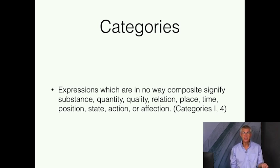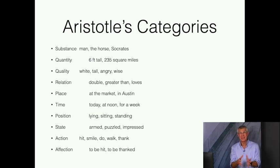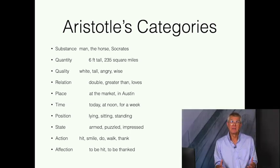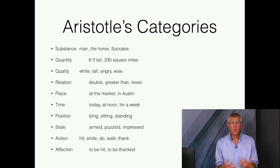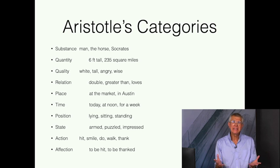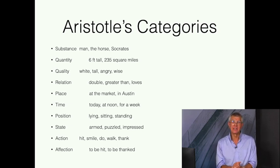Let's try to understand just what they are. He gives some examples, and I've elaborated and updated them to ones that make more sense in English. What is a substance? Examples include man, the horse, Socrates. Quantity: six feet tall, 235 square miles. Quality — often called properties — things like white, tall, angry, wise, various attributes of objects in the world. There are also relations among objects: double, greater than, loves. He tends to favor mathematical examples of relations, but of course there are many relations among human beings or among things.